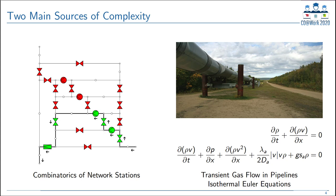The second source of complexity is the physics of gas flow in the pipelines. Gas flow through pipelines is typically described by the so-called Euler equations, which are a set of non-linear hyperbolic partial differential equations. What you can see here is the isothermal variant of the Euler equations. We assume that the temperature of the gas stays constant over time, leaving us with two equations: the continuity equation, which ensures conservation of mass, and the momentum equation, which describes the interaction between the force acting on gas particles and the rate of change in momentum.